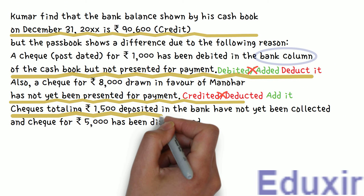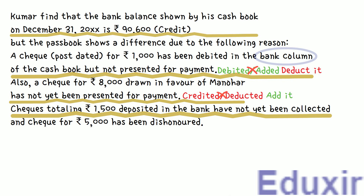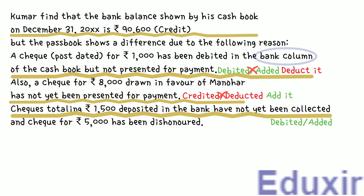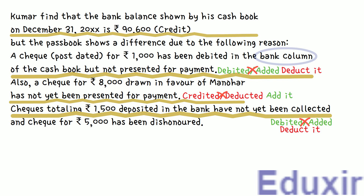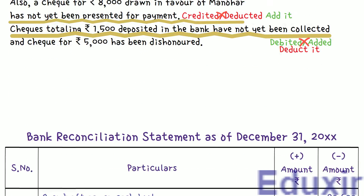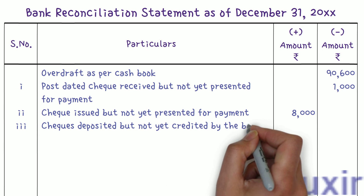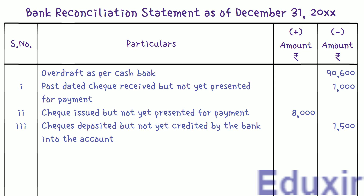Here it is given that checks totaling Rs. 1,500 were deposited into the bank but not yet collected by the bank. When the business receives these checks, they are debited in the bank column of the cashbook and then deposited in the bank. However, as these checks are not yet collected by the bank by the time the bank statement is received, there won't be any corresponding credit entries in the passbook. So we need to deduct this amount from the cashbook balance. We write the particulars as 'Checks deposited but not yet credited by the bank' and enter Rs. 1,500 in the minus amount column.